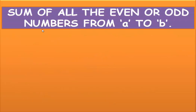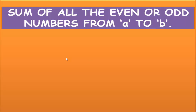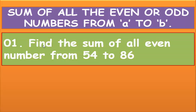Now we find the sum of all even or odd numbers from a given range, that is from a particular number to a particular number. For example, find the sum of all even numbers from 54 to 86. Here a equals 54 and b equals 86.